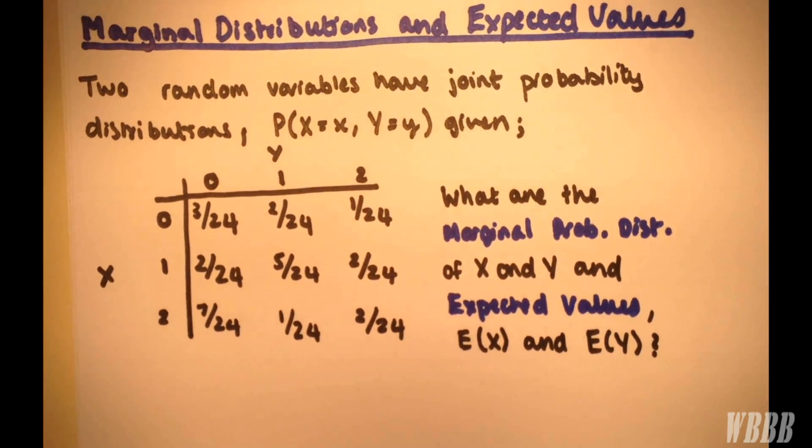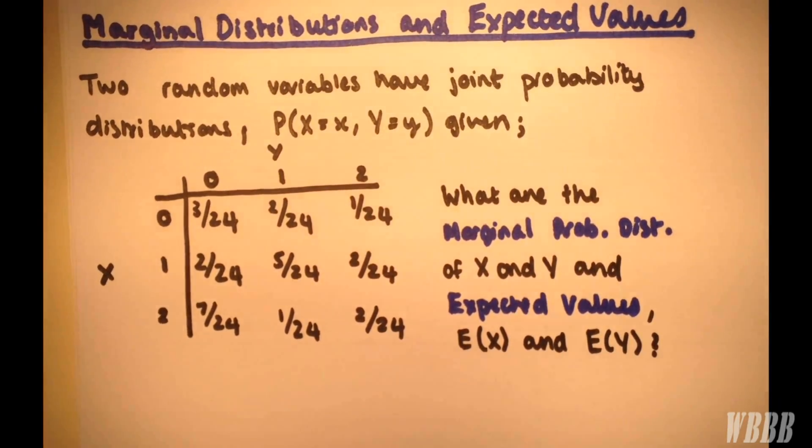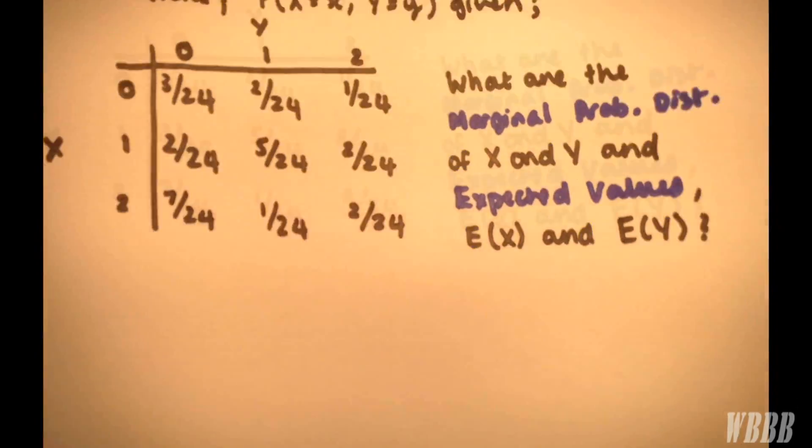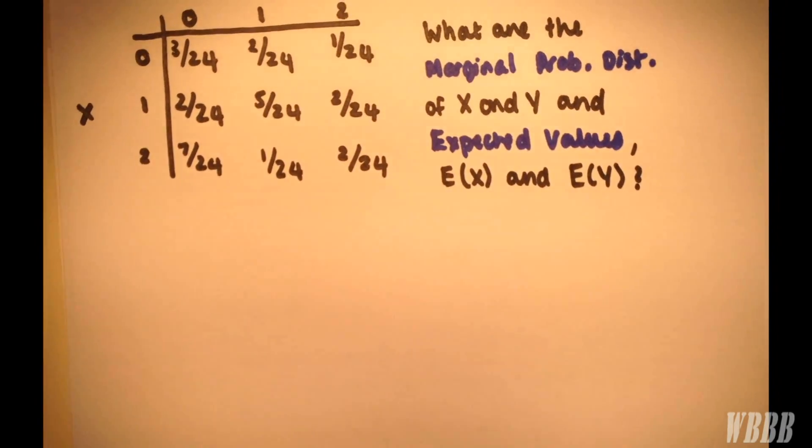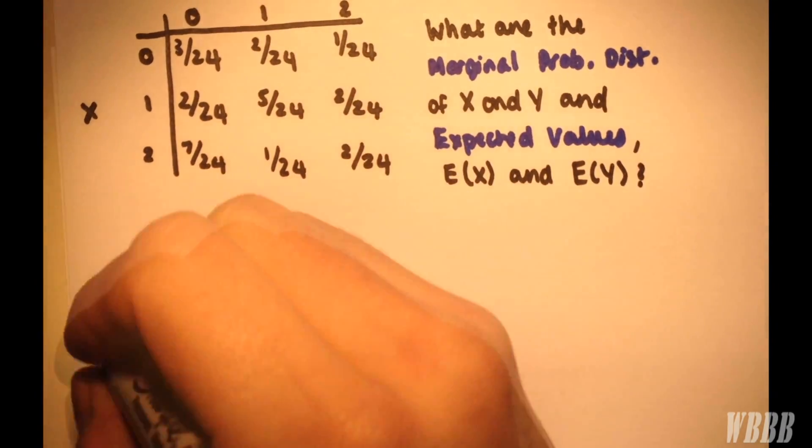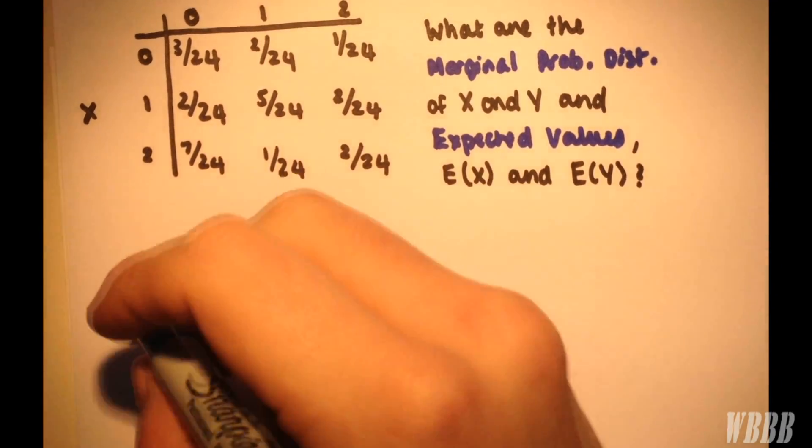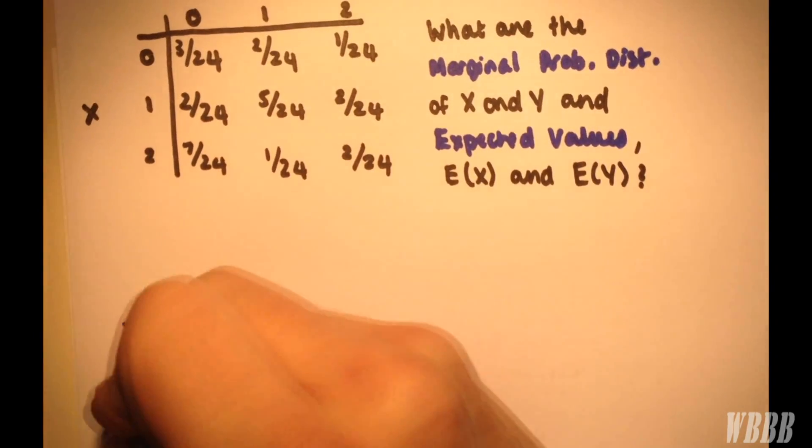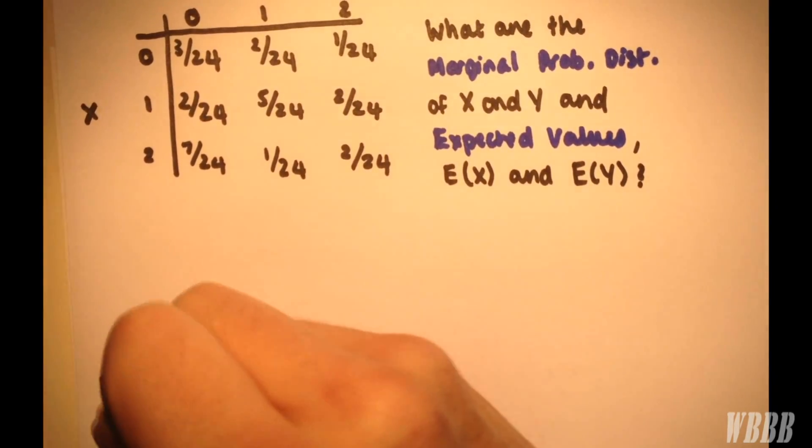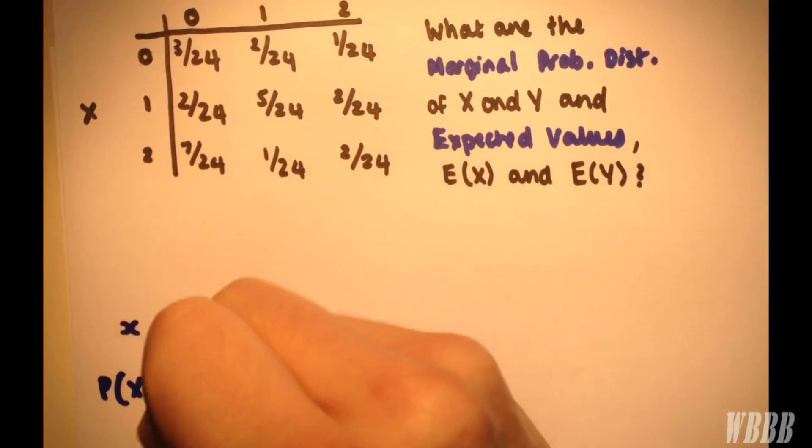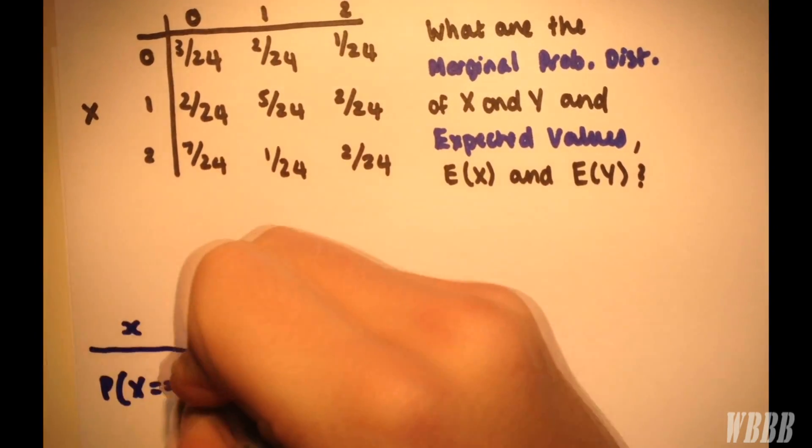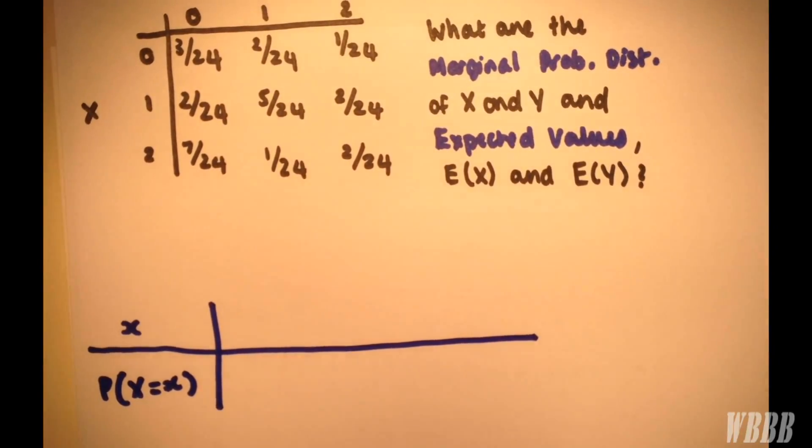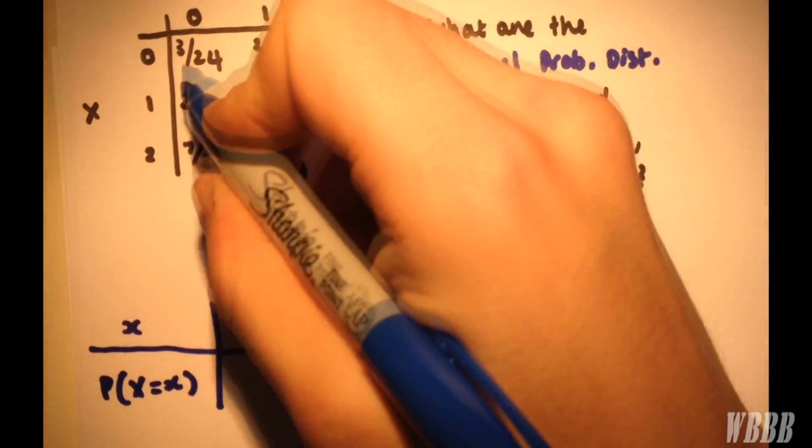So first, to find the marginal probability distribution, it's really just a matter of summing things up. The MPD of x we can write as follows. Let's draw a summary table here, and we have values 0, 1, and 2.